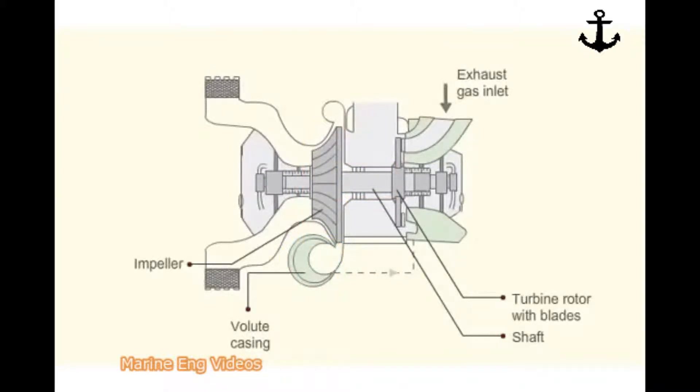The exhaust gas enters the water-cooled turbine casing through a grid which prevents any broken pieces of piston ring from entering the turbine. The exhaust gas passes through nozzles where the pressure energy is converted to kinetic energy. The gas impinges upon the turbine blades, rotates the turbine wheel and comes out of the exhaust gas outlet.